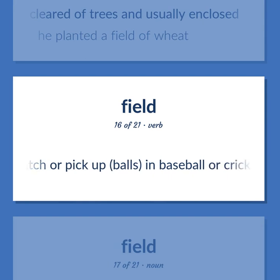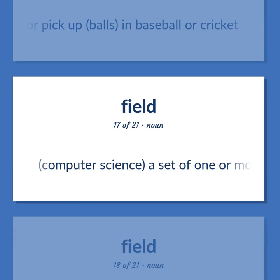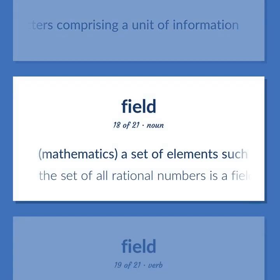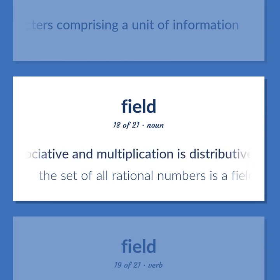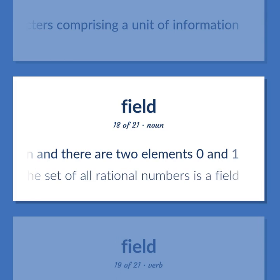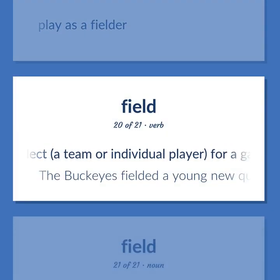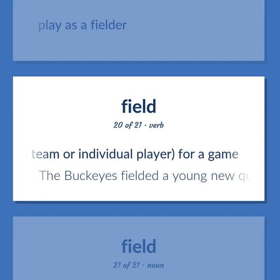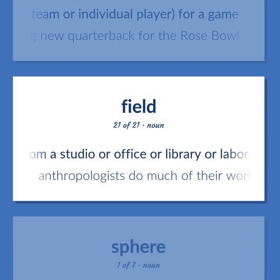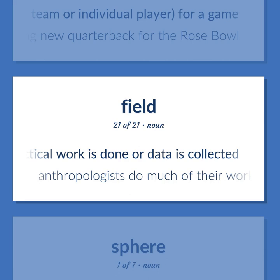Field: To catch or pick up balls in baseball or cricket. Computer science: a set of one or more adjacent characters comprising a unit of information. Mathematics: a set of elements such that addition and multiplication are commutative and associative, and multiplication is distributive over addition, with elements 0 and 1 — the set of all rational numbers as a field. To play as a fielder. To select a team or individual player for a game — the Buckeyes fielded a young new quarterback for the Rose Bowl. Somewhere away from a studio, office, or library where practical work is done or data is collected — anthropologists do much of their work in the field.